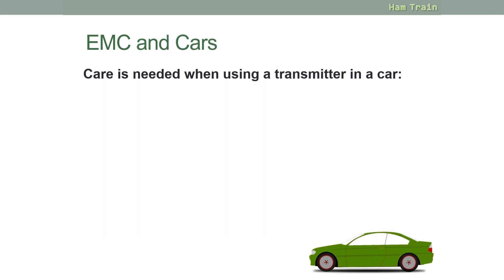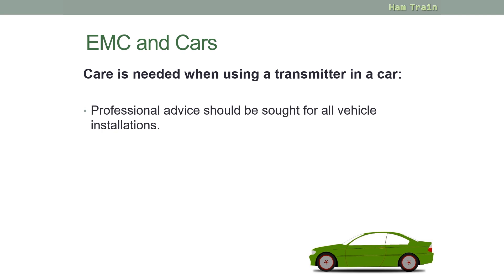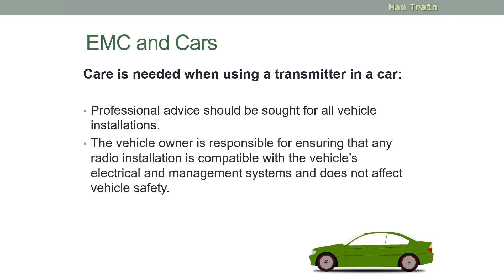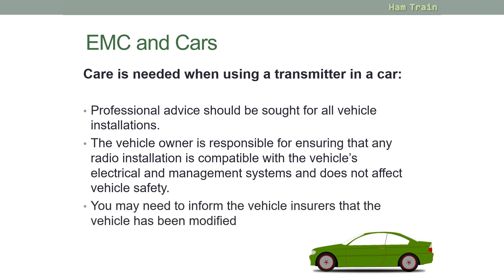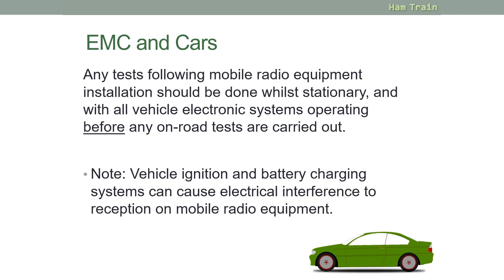Looking now at EMC and vehicles. Care is needed when using a transmitter in a car. You should seek professional advice before installing anything in your vehicle. The vehicle owner is responsible for ensuring that radio equipment is compatible with the vehicle's electrical and management systems and does not affect the safety of the vehicle. You should also note that you may need to inform the vehicle insurer that you have modified the vehicle. Any tests using mobile radio equipment should be made while the vehicle is stationary and with all of the vehicle's electronic systems operating before you try any on-road tests. Vehicle ignition and battery charging systems can also cause electrical interference on the reception of any radio equipment you install.